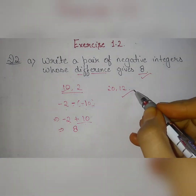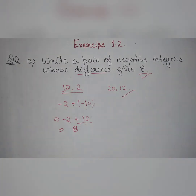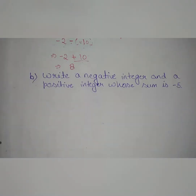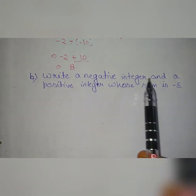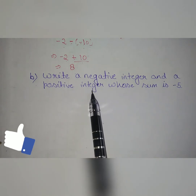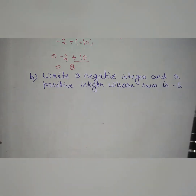In the same way, there are many other pairs whose difference is 8. Now let's see our second part: write a negative integer and a positive integer whose sum is minus 5. We need a pair of integers where one is negative and the other is positive.